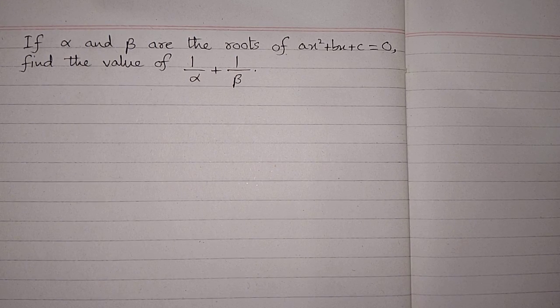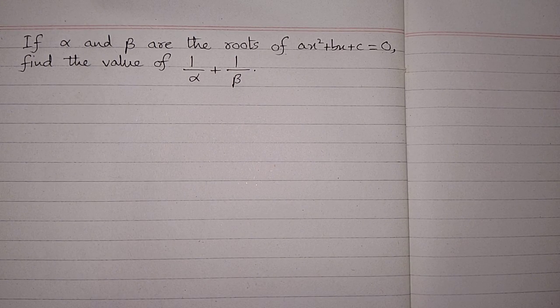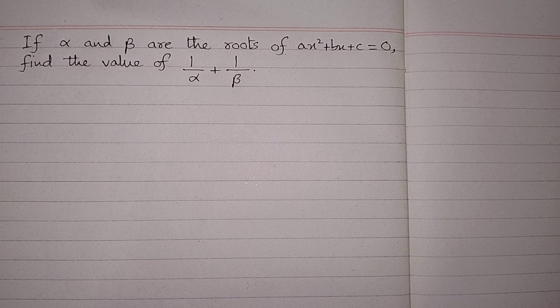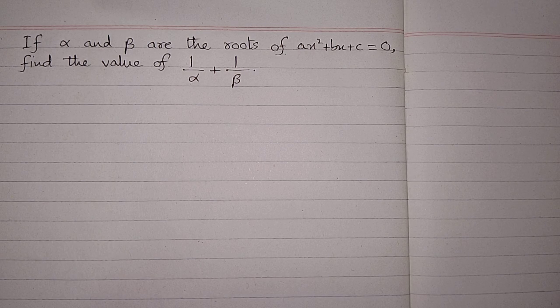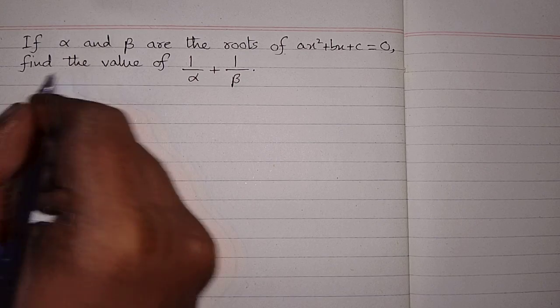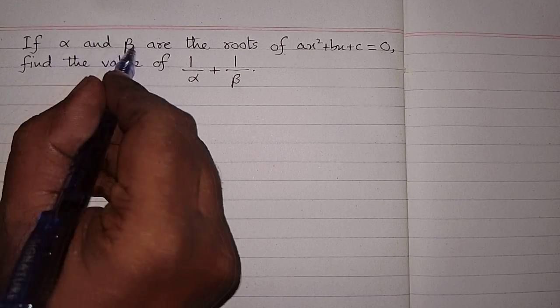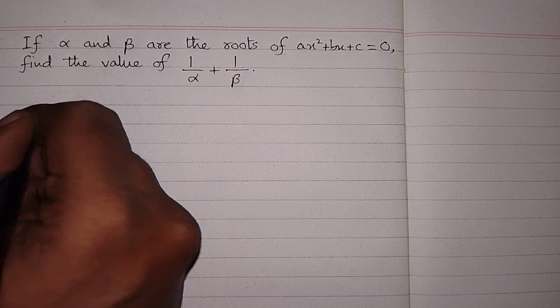If alpha and beta are the roots of the quadratic equation ax² + bx + c = 0, then find the value of 1 upon alpha plus 1 upon beta.